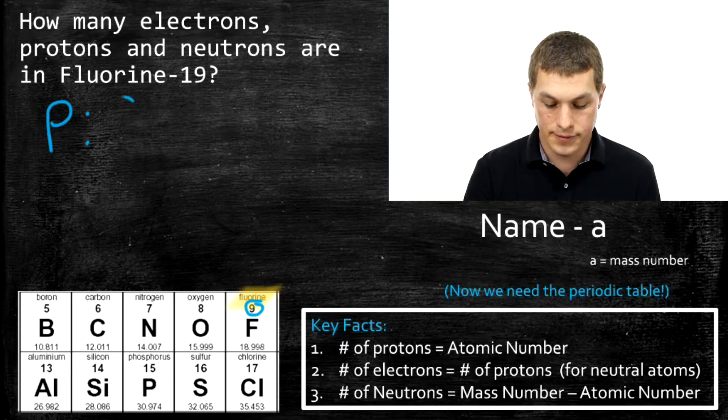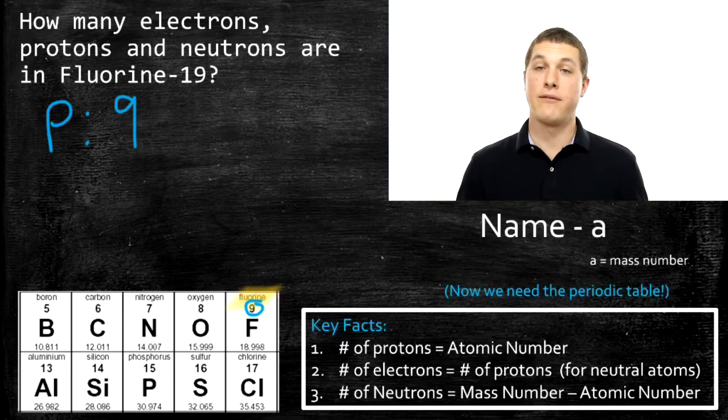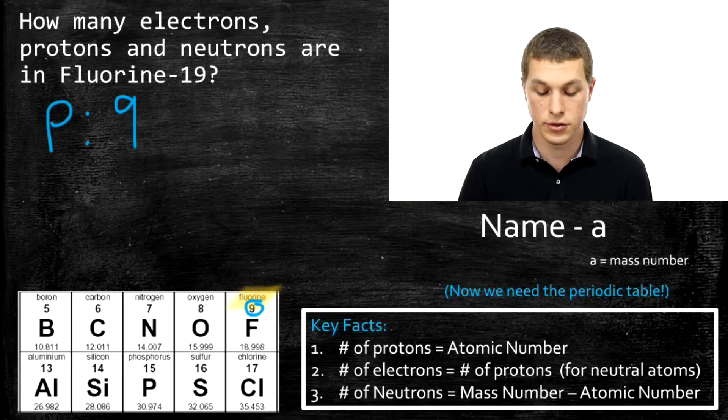So now we have our atomic number, and now we have all the information we had before with our longer version of isotope notation.